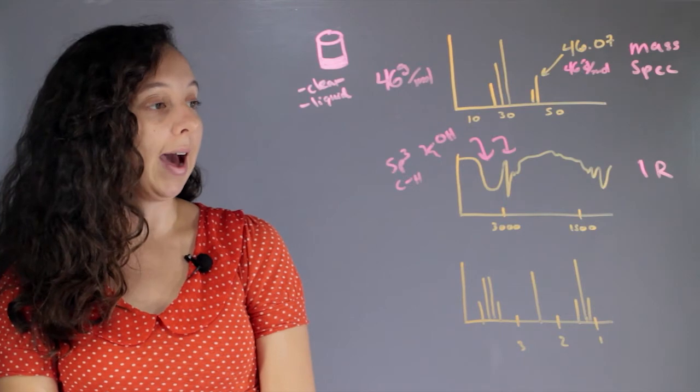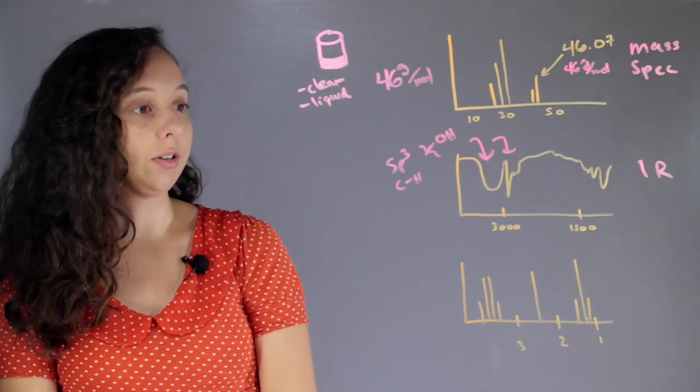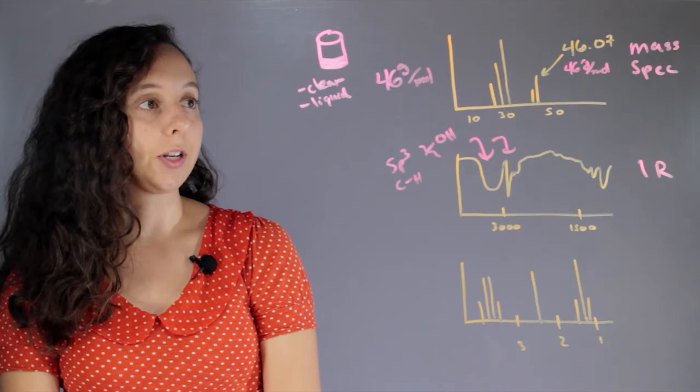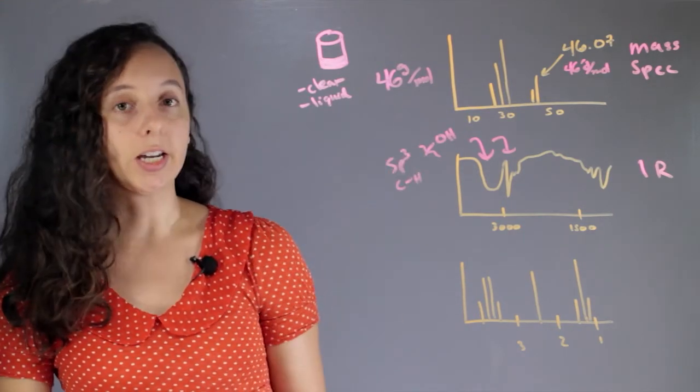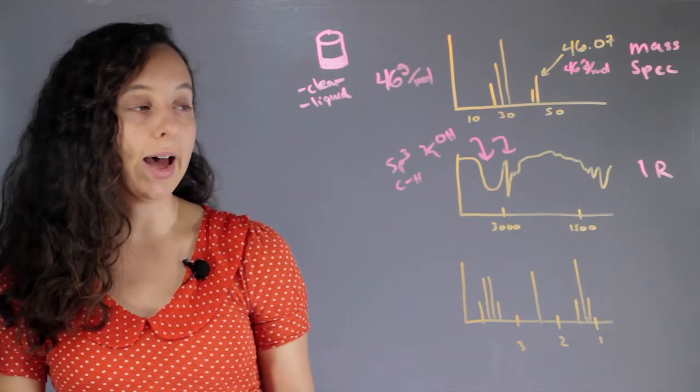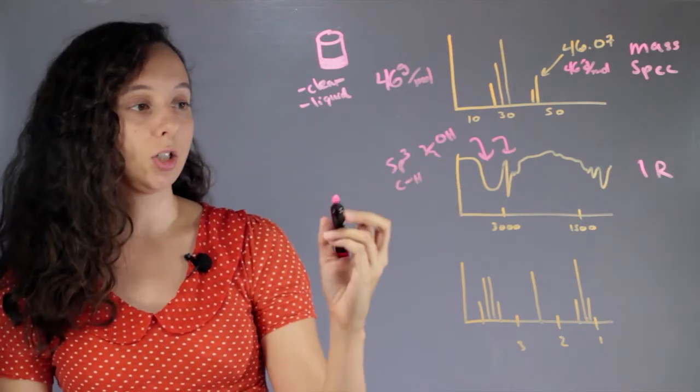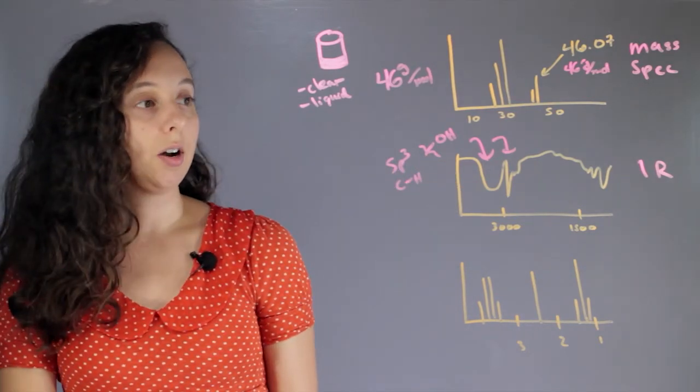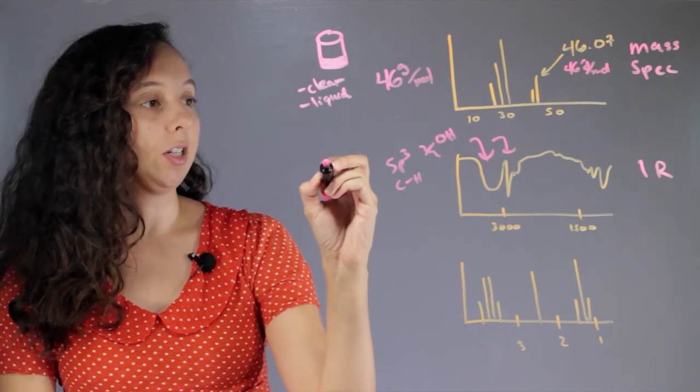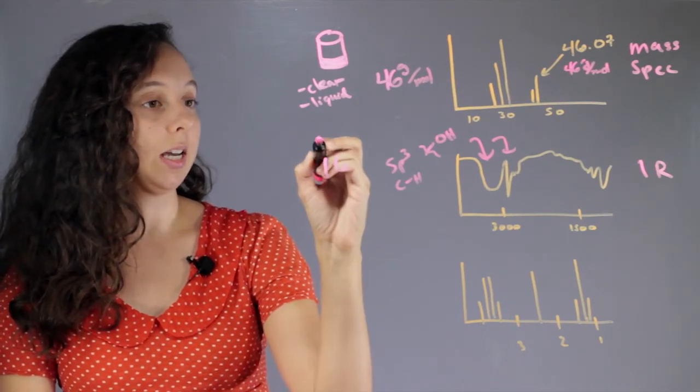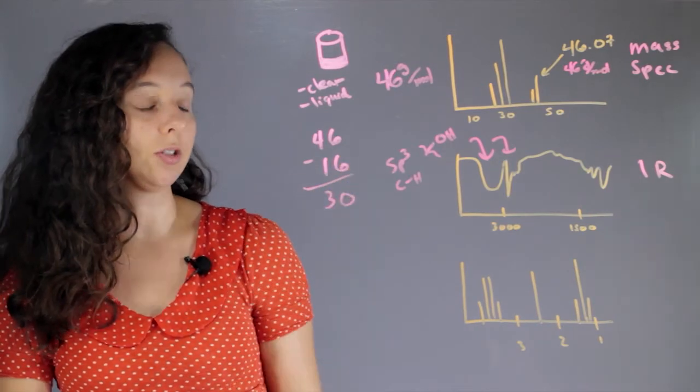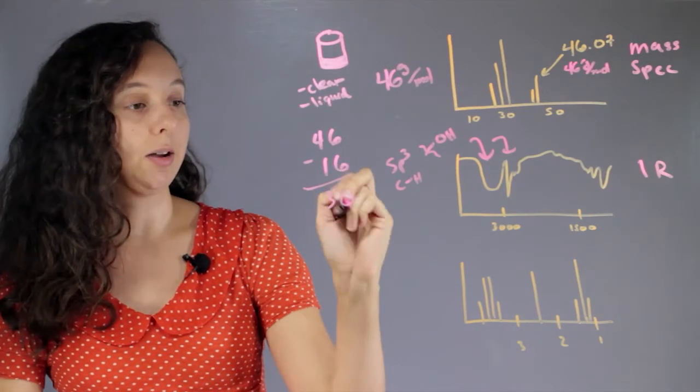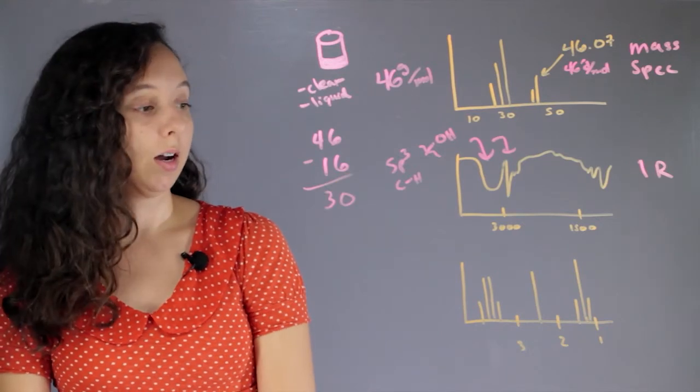This is what we have now. We can kind of guess a couple different structures. We know it only weighs 46. Each carbon weighs 12. We know it has an oxygen. Oxygen weighs 16. So basically, if we do 46 minus 16, we know that after that oxygen is gone, we have 30 more AMUs to figure it out.